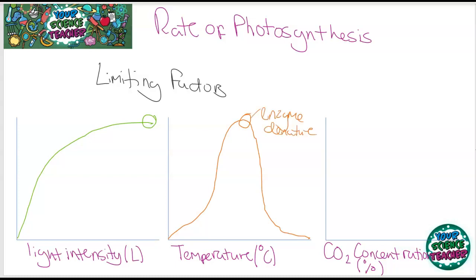And the last one to look at is carbon dioxide concentration, and it follows a similar pattern as light intensity. As the carbon dioxide concentration increases, so does the rate of reaction, until we get to the limiting factors of the other light and temperature. They will limit the amount of photosynthesis that can occur.